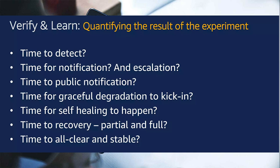To quantify the results, we should check: the time it takes to detect the failure, the time for notifications and escalations, and the time for public notifications. We also check the time to recovery, whether self-healing happens or not, and the time to clear everything and make the system stable. All these things can be verified easily with the help of chaos testing.